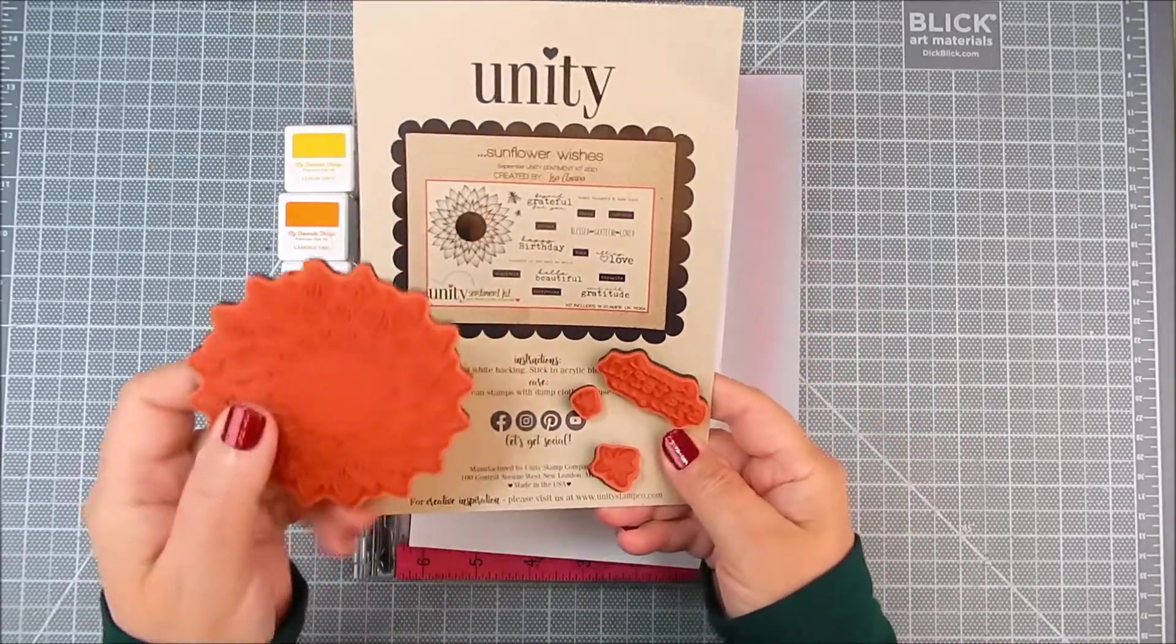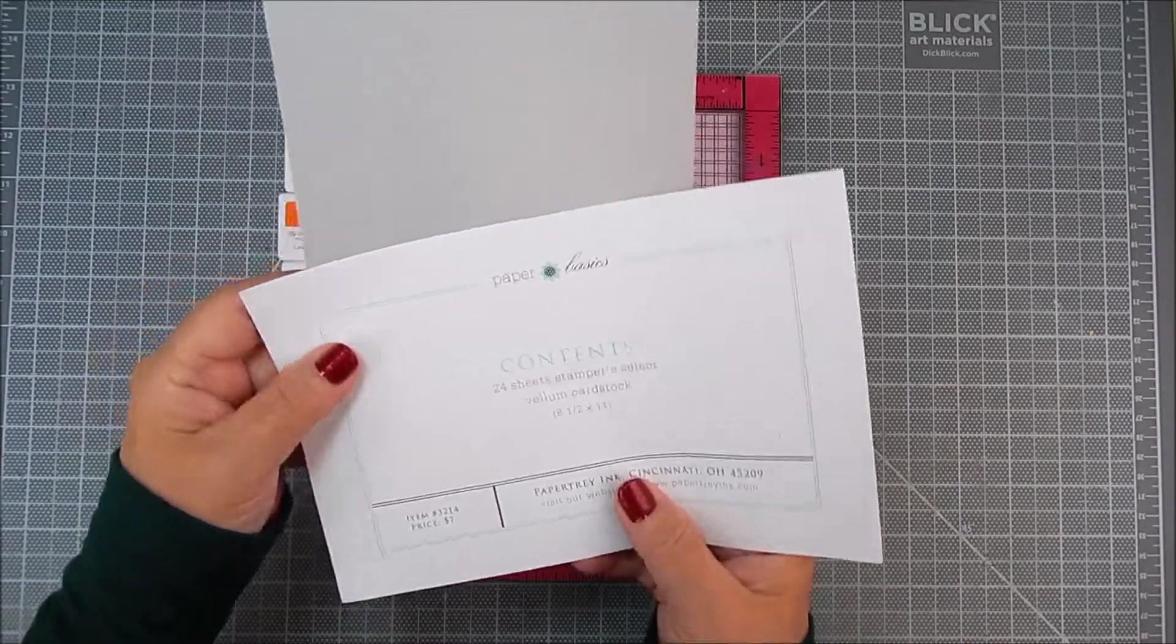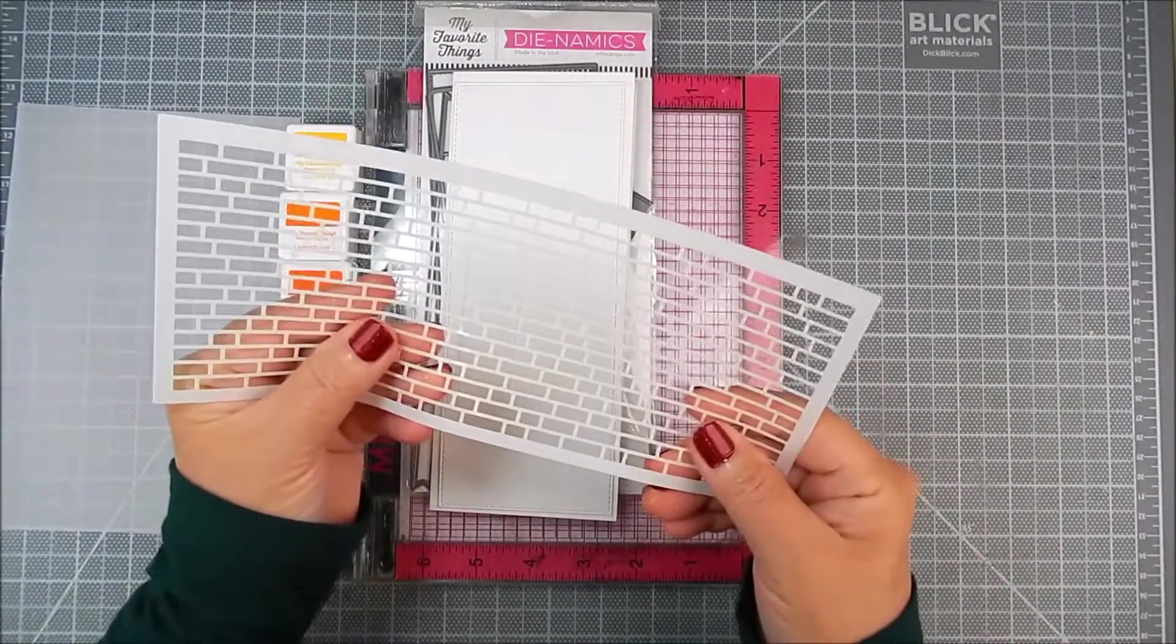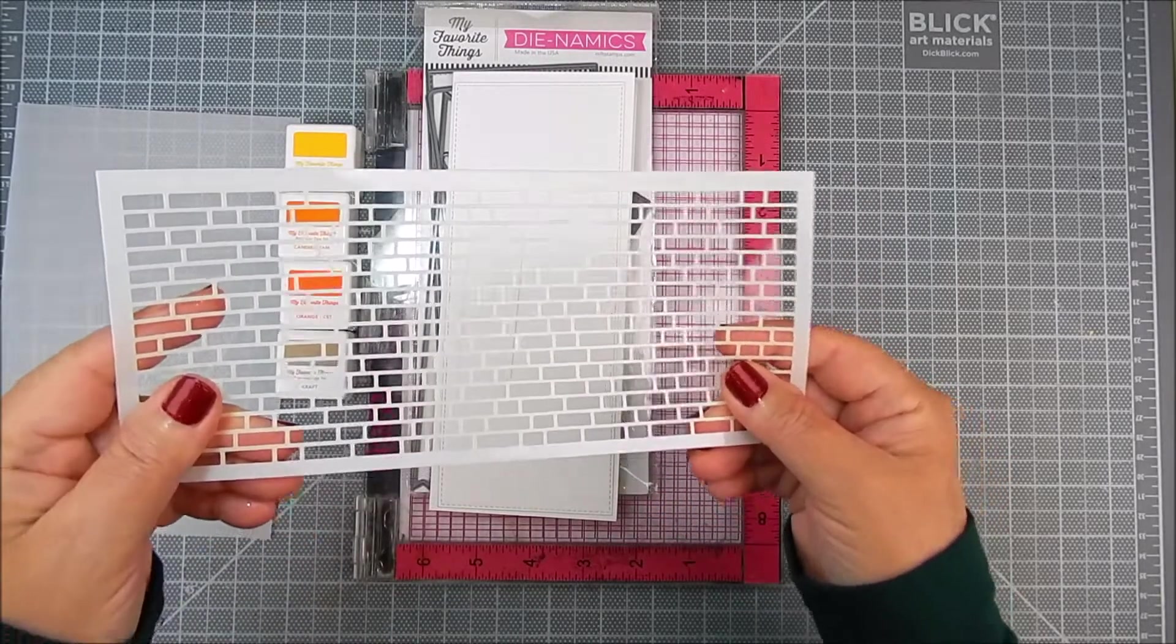It's called Sunflower Wishes, the September 2021 sentiment kit by Lisa Arana. I'm using stencils and dies by My Favorite Things.